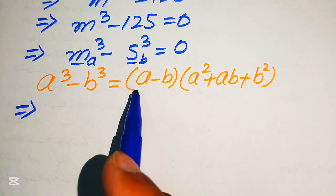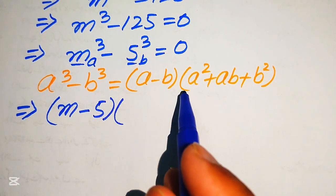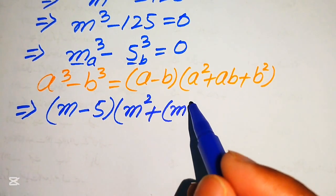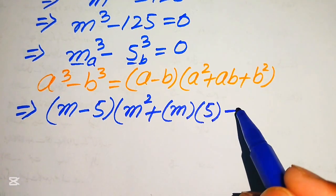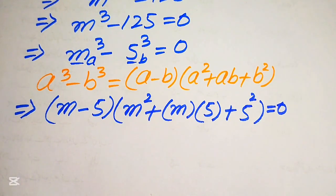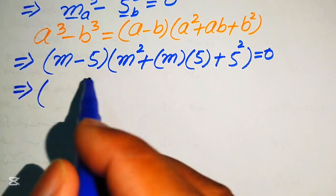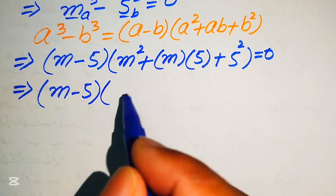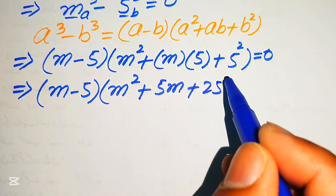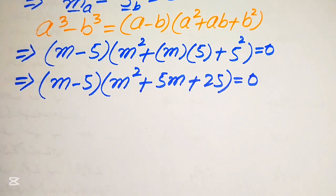When we write a minus b, it means here our a is m minus b is 5, into a squared — so here our a is m squared — plus ab, again our a is m and b is 5, plus b squared. So b is 5 squared, and this whole equation equals to 0.